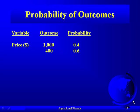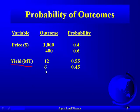The probability of outcomes: for the variable price, there are two outcomes. The price could be $1,000 or $400 per metric ton. The probability that we have $1,000 per metric ton is 40%, and there's a greater probability — 60% — that we'll have the lower price of $400. For yield in metric tons, there's a 55% chance we get 12 metric tons per acre, and a 45% chance we get only 6 metric tons per acre.